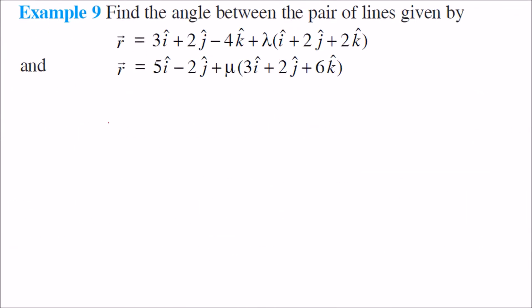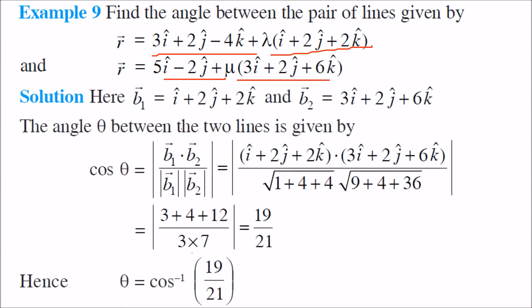Let us understand with an example. If r is this, a1 plus lambda b1, and this is a2 plus mu b2, we want to find the angle. Take b1 as this one and b2 as this one. Cos theta is b1 dot b2 divided by the magnitudes: 1 square plus 2 square plus 2 square under root, and 3 square plus 2 square plus 6 square under root. You get 19 by 21, so theta equals cos inverse 19 by 21.